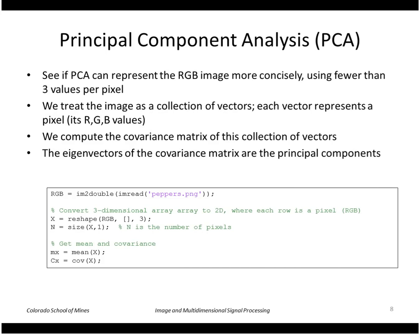An interesting thing we can do is apply principal component analysis to these color vectors. The RGB image is composed of three values per pixel, but perhaps we can represent the image more concisely using fewer than three — for example, two. We treat the image as a collection of RGB vectors, compute the covariance matrix, and find its eigenvectors — those are the principal components.